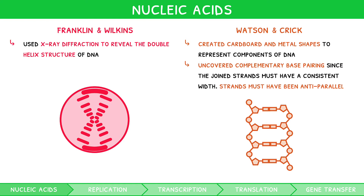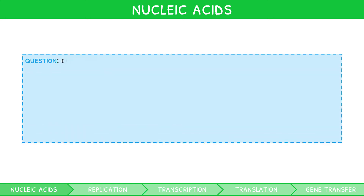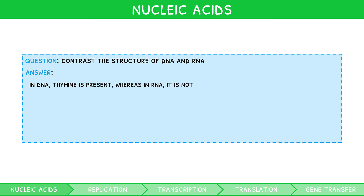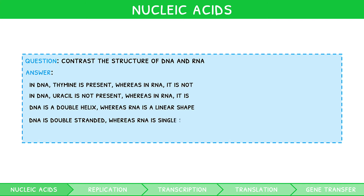Now that you understand the structure of DNA and RNA, let's look at a very common exam question: contrast the structure of DNA and RNA. These questions are best approached using whereas statements. In DNA, thymine is present, whereas in RNA it is not. In DNA, uracil is not present, whereas in RNA it is. DNA is a double helix, whereas RNA is a linear shape. DNA is double stranded, whereas RNA is single stranded. DNA contains a deoxyribose sugar, whereas RNA contains a ribose sugar.